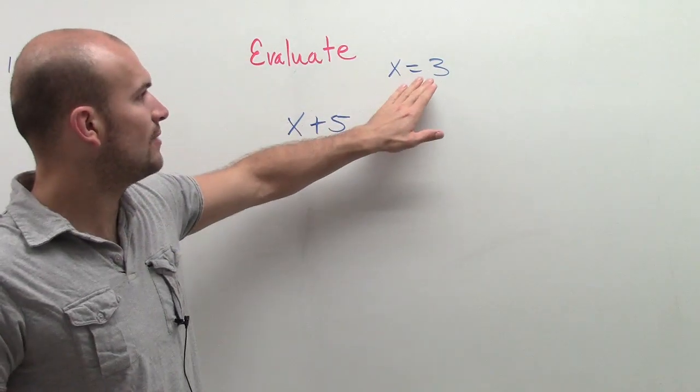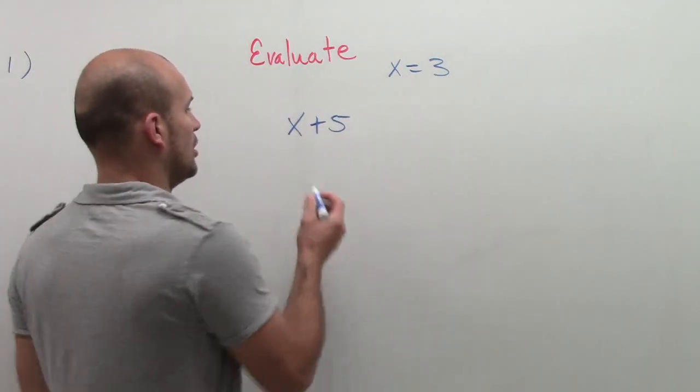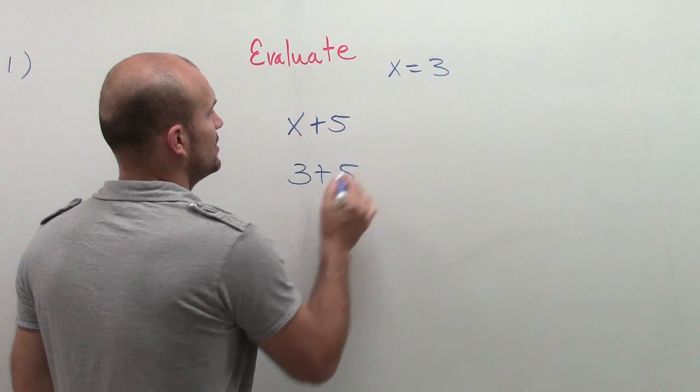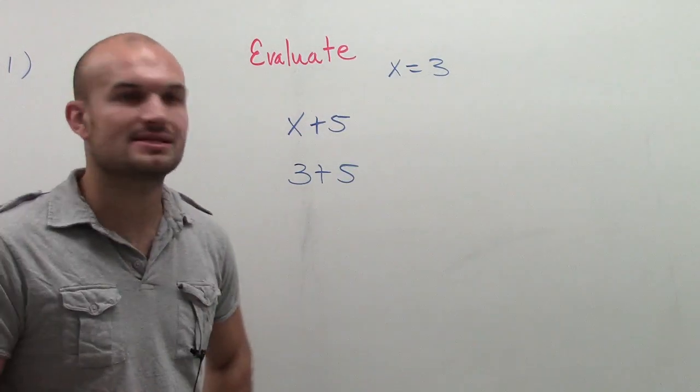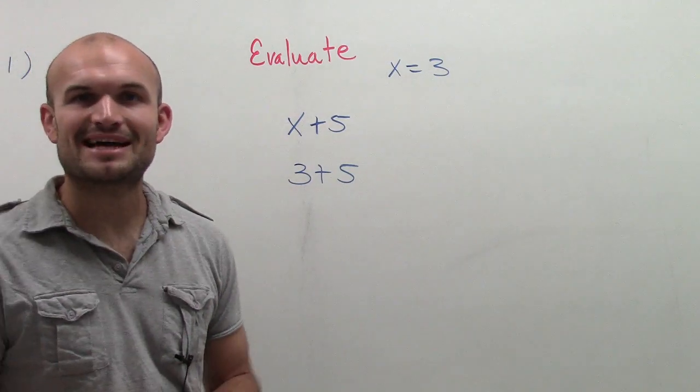So when doing that, what that means is I can now replace 3 in for x. All I'm simply going to do is rewrite the expression with my new value in place of x. So now I have 3 plus 5, which is going back to elementary math.